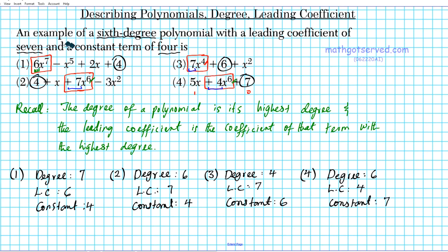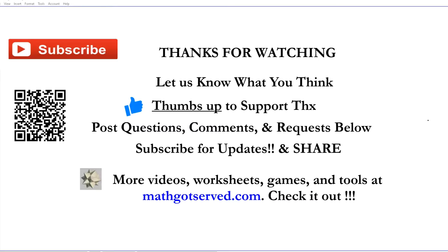We're looking for a polynomial with degree six, leading coefficient seven, and constant term four. That eliminates options one and three, which have degrees of seven and four respectively. Option four has the wrong leading coefficient and constant. So the answer is option number two. Thanks for watching — support resources can be found at mathgotserved.com. See you in the next video. Goodbye.